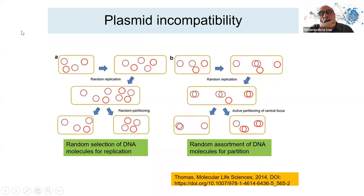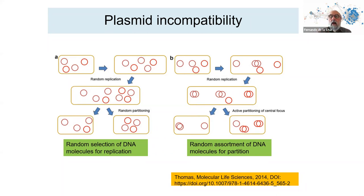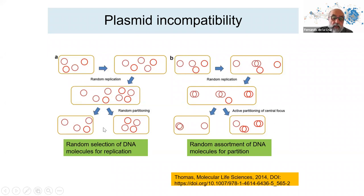Because of replication, plasmids can be incompatible. Two plasmids are incompatible when they cannot reside in the same cell, because if they share the same replication machinery organization, the cell cannot distinguish between them. They cannot assort independently — the replication protein treats them as the same plasmid, leading to random selection during replication and partition, making one or the other unstable and eventually lost.